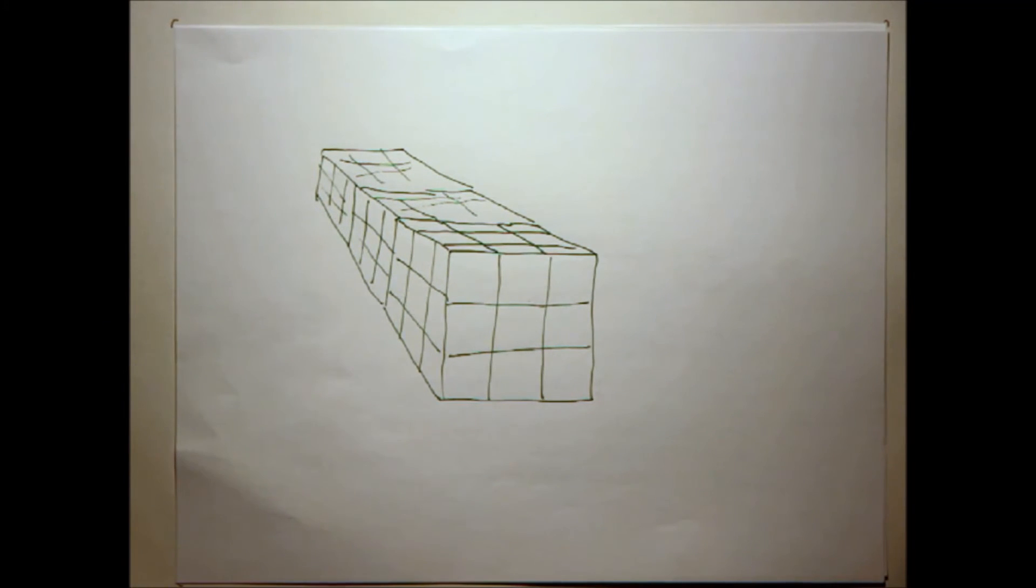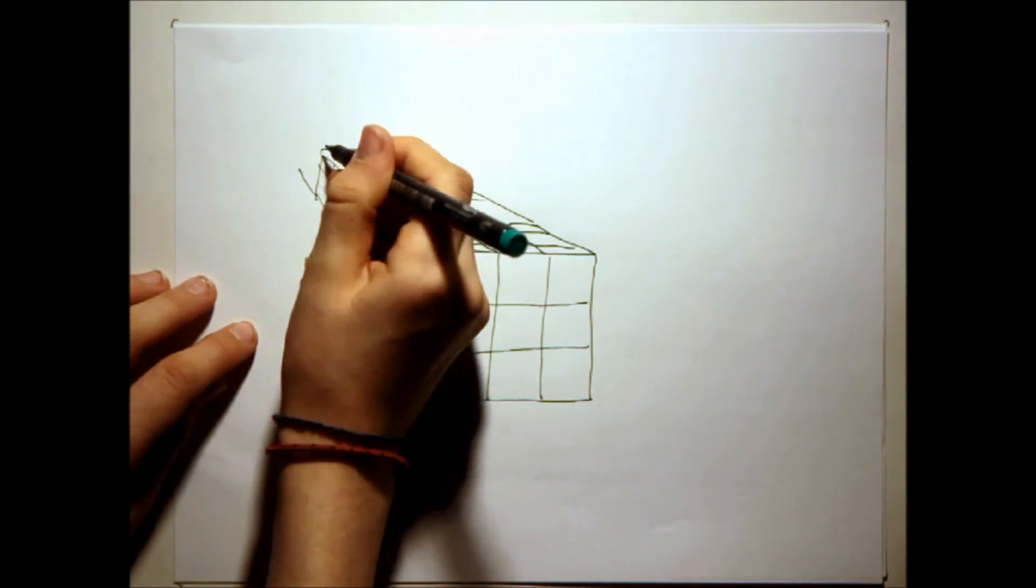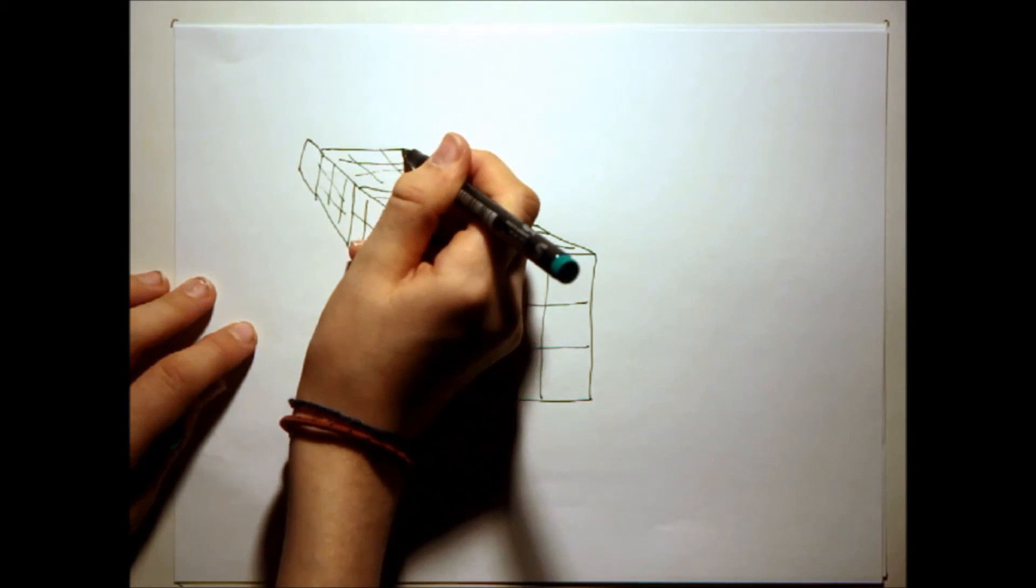If the sixth dimension is a cube of possible universes with the same start conditions, then the seventh dimension is a line of those cubes, all with different start conditions.